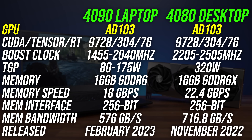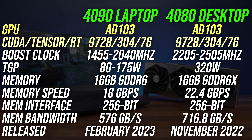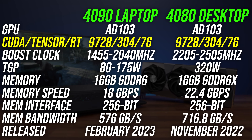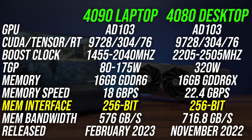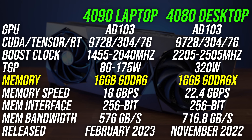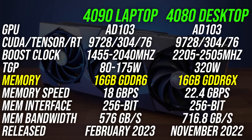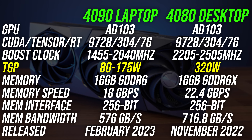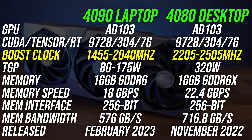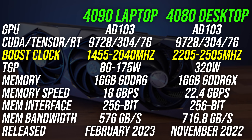Both GPUs use the same AD103 die, so they've got the same amount of CUDA, Tensor, and RT cores. They've both got a 256-bit memory bus and 16 gigs of VRAM, but the desktop card uses faster GDDR6X memory. The desktop card also has a higher power limit, so it's able to hit higher clock speeds. Both technically have the same GPU inside, but the desktop card has faster memory and can use more power.